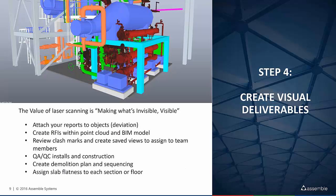Now for step number four. Now that we have our model and our scan, the next step is creating visual deliverables. This is something we may not have had before. Whether we're creating an RFI, creating a list of items that need to be removed, or identifying clashes — do we have visual deliverables that are easy to share with our entire team? This is what we want to do with our point cloud data.